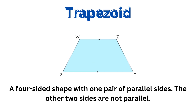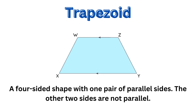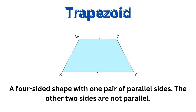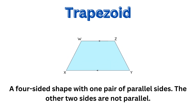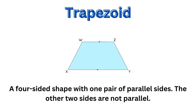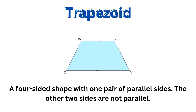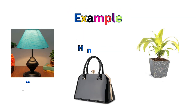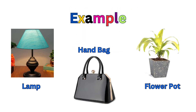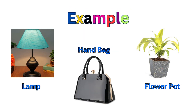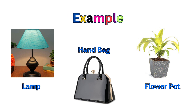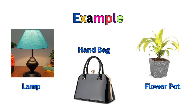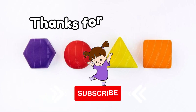This shape is a trapezoid — a four-sided shape with one pair of parallel sides and the other two sides are not parallel. The examples are a lamp, a handbag, and a flower pot.